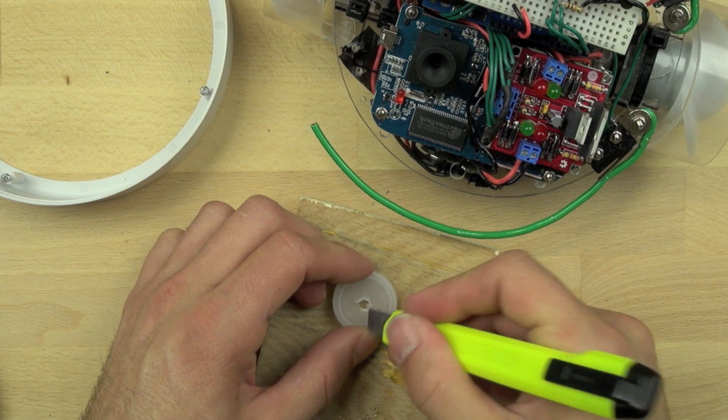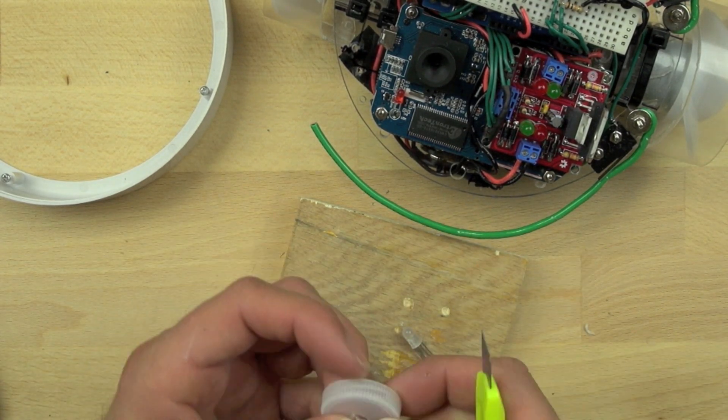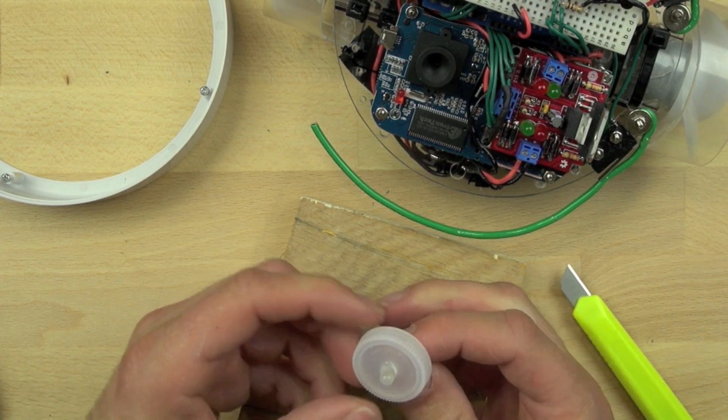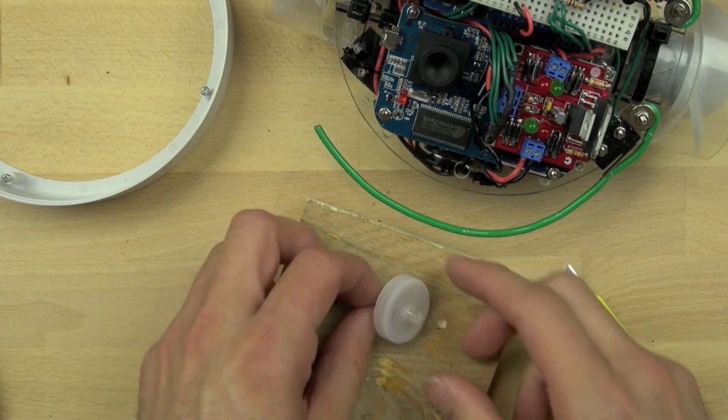So we're going to trim the excess off of the bottle cap there, the scrap that the drill bit left, and then we can put our LED in the middle of it and we've got a Bitsy eye.